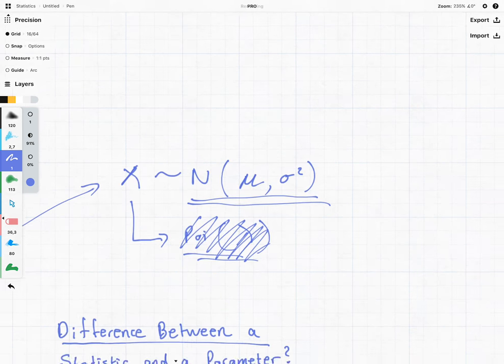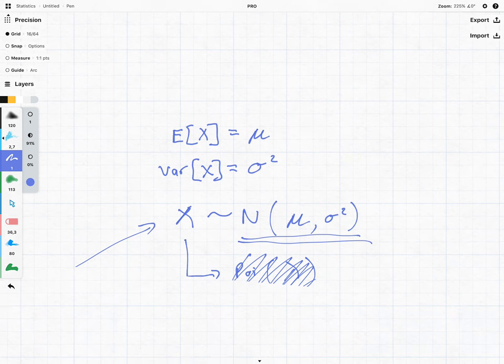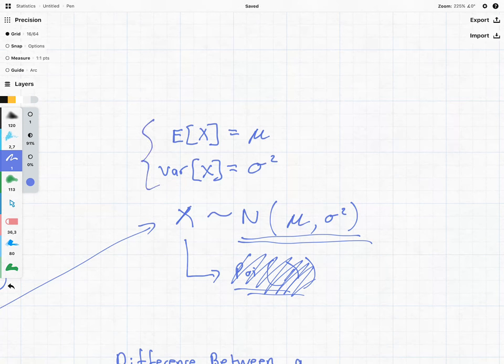Now we know from normal distributions that the expected value of X is going to be equal to mu and the variance of our random variable when it's a normal distribution is equal to sigma squared. That is stuff that we know from just our studying of probability distributions.